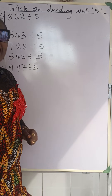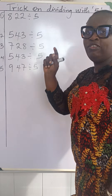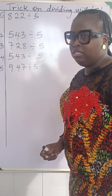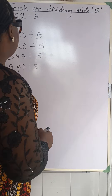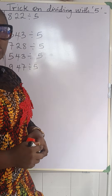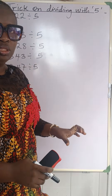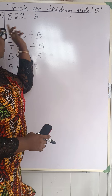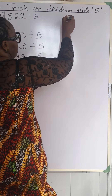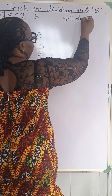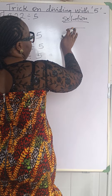Welcome to today's class. We'll be looking at a trick for dividing with 5 as the divisor — you have a dividend and you divide by 5. Before I go into the trick, I'm first going to divide the normal way using the long division method to do 822 divided by 5. Let's look at it here — we have our solution and this is our division line.